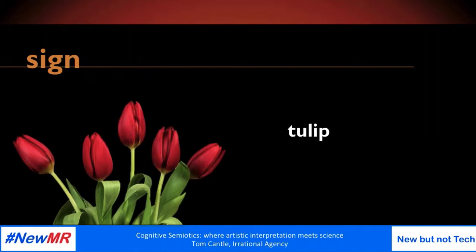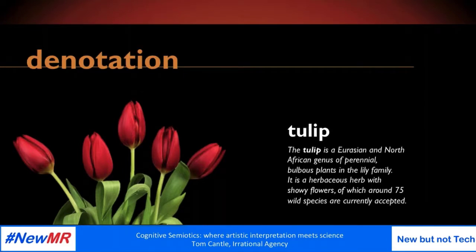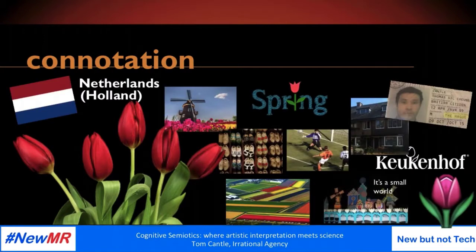Let's give an example of how this works to make it real. Here's an example of a sign — it's, of course, a tulip. The denotation, as in the literal meaning of what a sign is, is the first layer of semiotic analysis. Here's what Wikipedia says a tulip is: it's a herbaceous herb. That's the denotation of a tulip. But that's just one layer. What you associate with the sign is the second, more important layer. This is connotation.